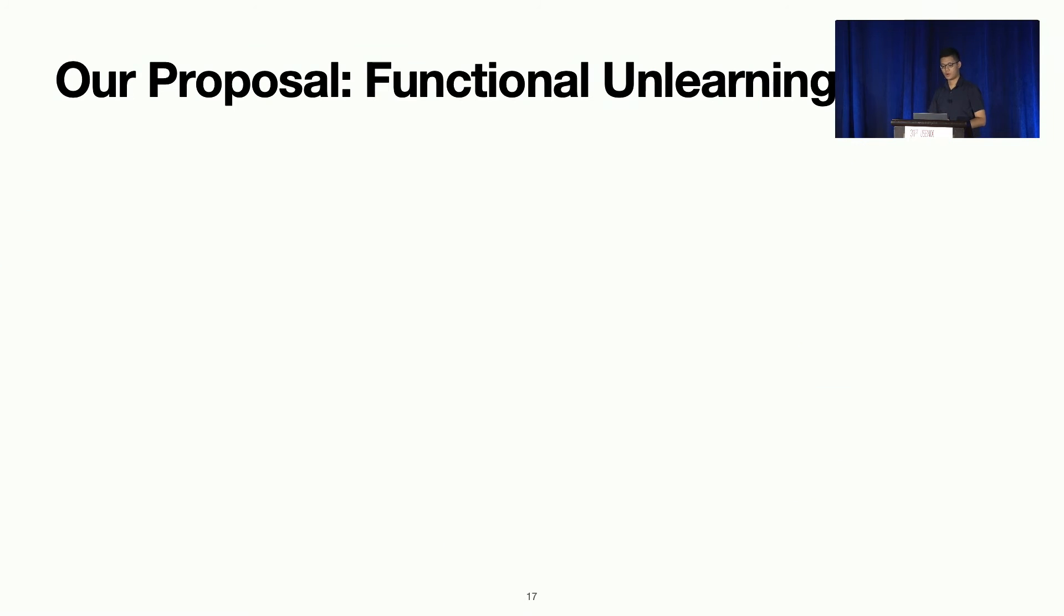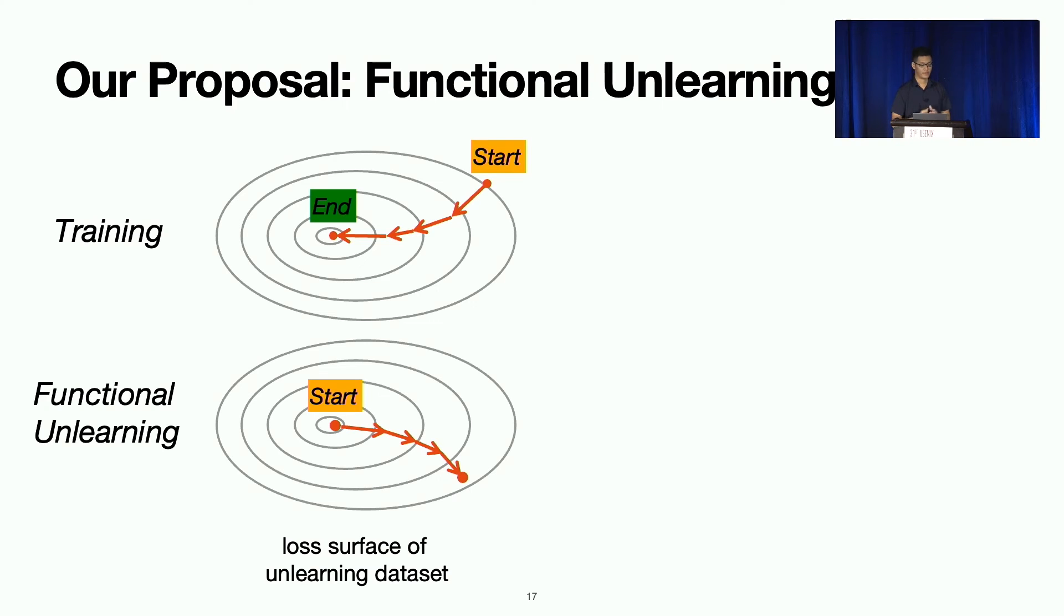As a result, we propose our own version of unlearning. We call it functional unlearning. The idea is this. A normal model training, you start with a poor model, a randomly initialized model. You slowly, slowly converge to a local optimal. Functional unlearning simply reverts that process. We start with a good original model. We want it to perform poorly on the data you want to unlearn. We want to forget because you didn't learn anything from the dataset. So how do we do this?